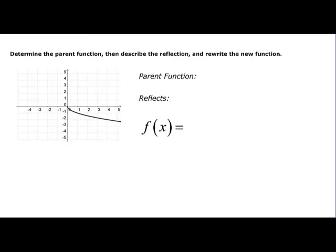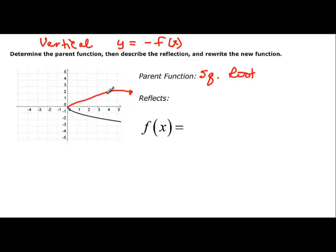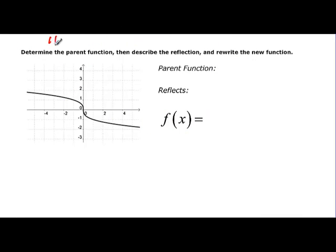Now we're going to talk about reflections. This is a vertical reflection. Your paper says y equals the opposite of f(x). So here, the parent function is the square root. When I had the point (4, 2) on the parent function, now I'm going to have that same x but the opposite y — so the point becomes (x, −y). That's the vertical reflection: the opposite of f(x), which was the square root of x. The next one is going to be a horizontal reflection.